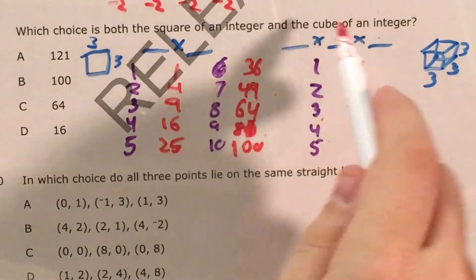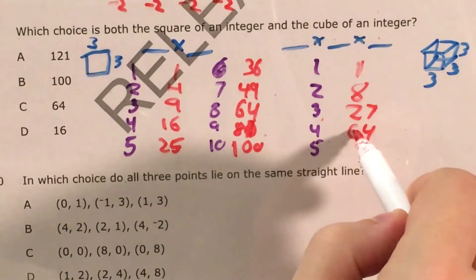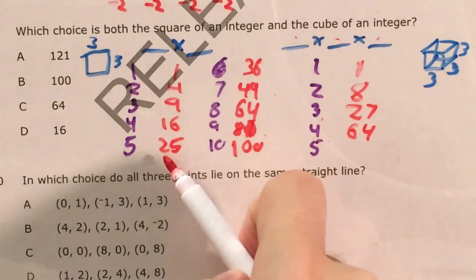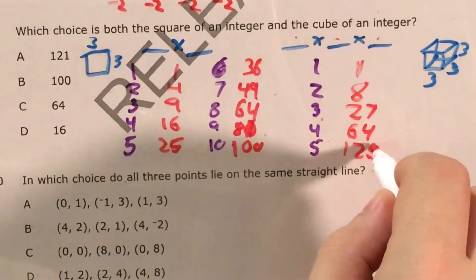4 times 4 times 4 is like 16 times 4, which is 64. And then 5 times 5 times 5 is like 25 times 5, which will get us 125.